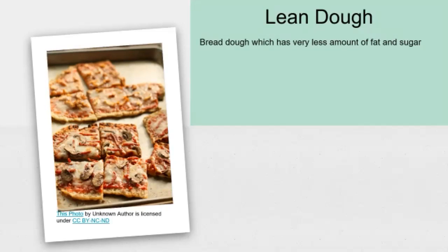First is lean dough. Bread dough which has a very less amount of fat and sugar is called a lean dough. Pizza base is a very common example which has been made using the lean dough.